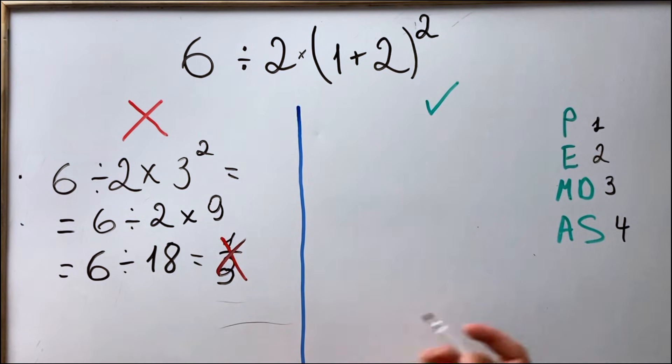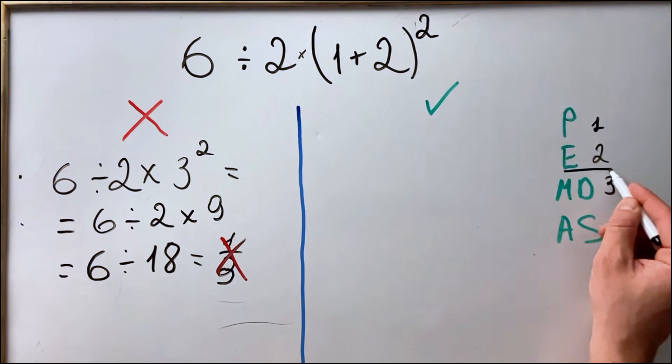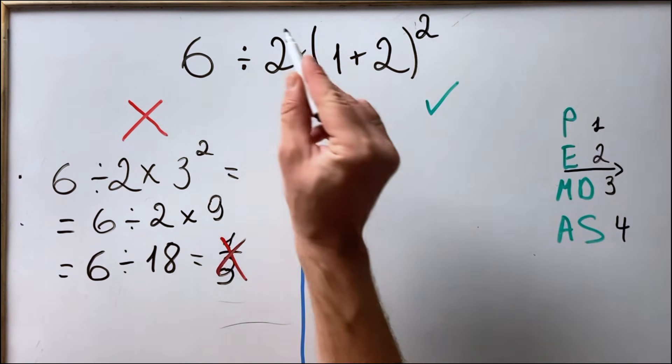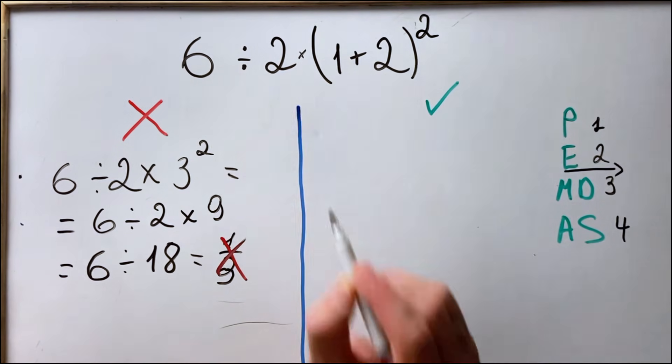Why is it wrong? Because in the order of operations PEMDAS, multiplication and division must be done from left to right. So in this equation, after doing the parenthesis and the exponents, we should do the division and then the multiplication.